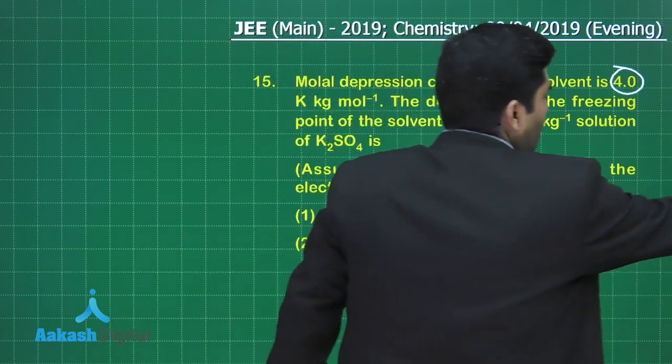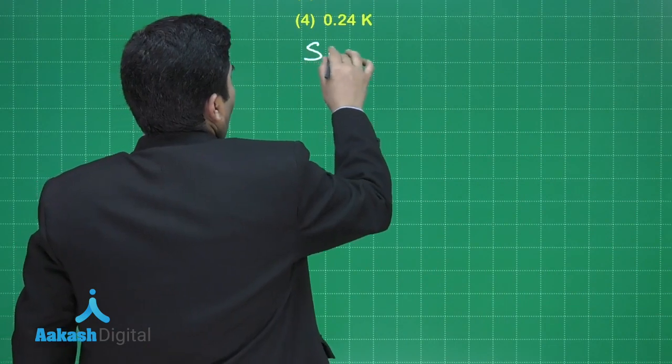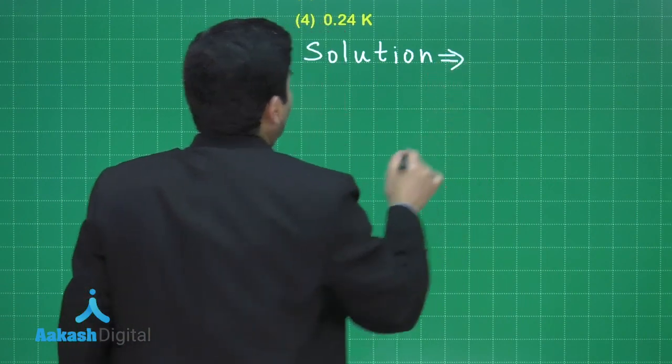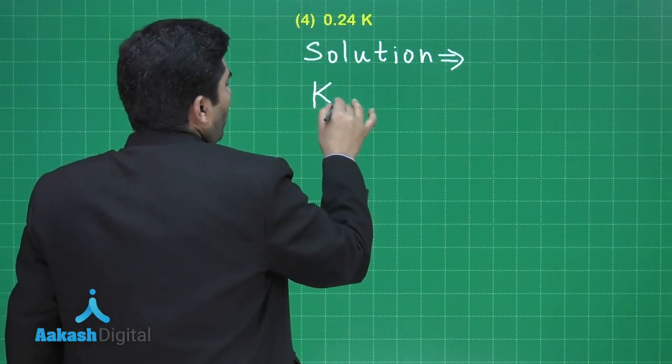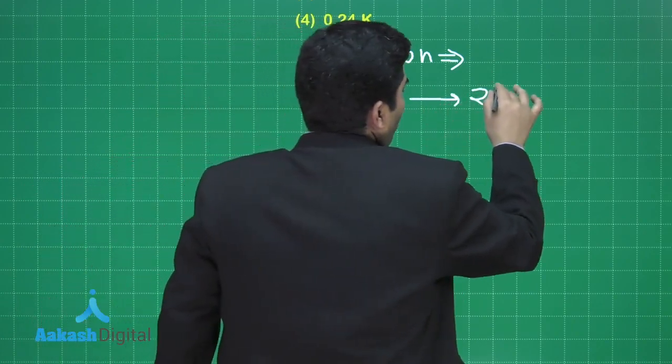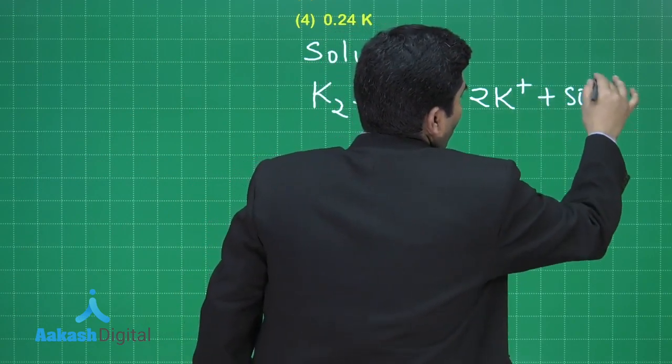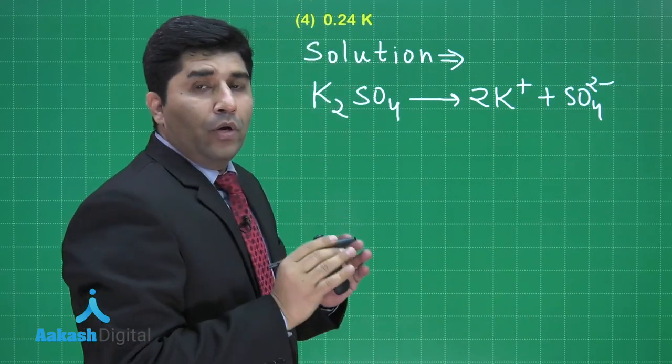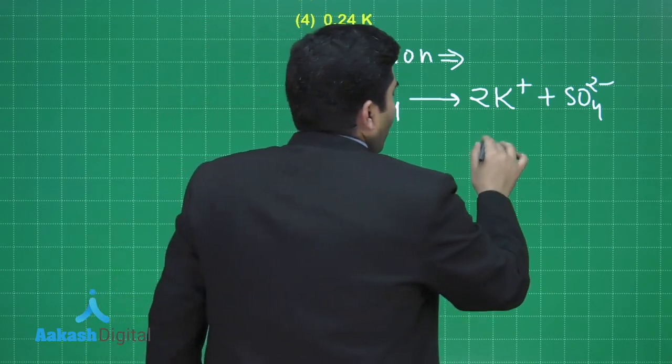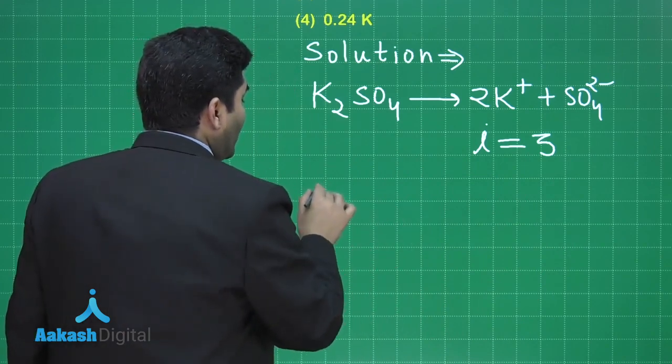There are four options. And he is saying that assume complete dissociation of the electrolyte. Let us start solving the question. So the solution is when K2SO4 will dissolve in water, it will give us 2K plus plus SO4 2 minus. Now since it is completely dissociating, that's why it will have the Van't Hoff factor is equal to 3.